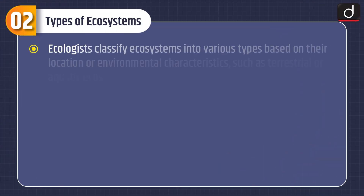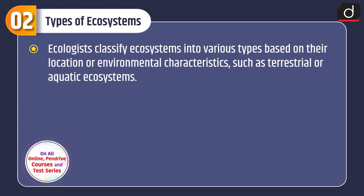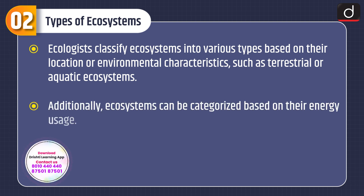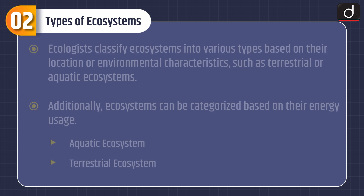Now moving on to types of ecosystems. Ecologists classify ecosystems into various types based on their location or environmental characteristics, such as terrestrial or aquatic ecosystems. Additionally, ecosystems can be categorized based on their energy usage.